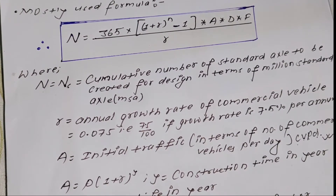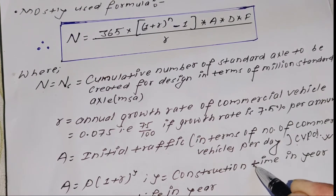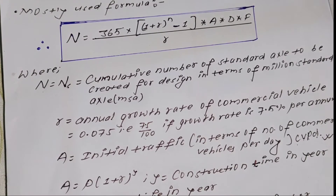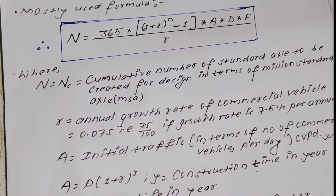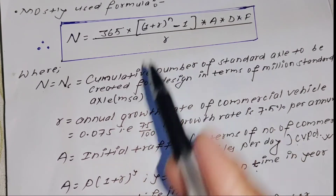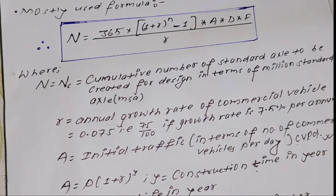The initial traffic value A is based on present traffic, projected using construction time in years. The formula uses P × (1 + r)^y, where y is the construction time in years. D is the design life in years.